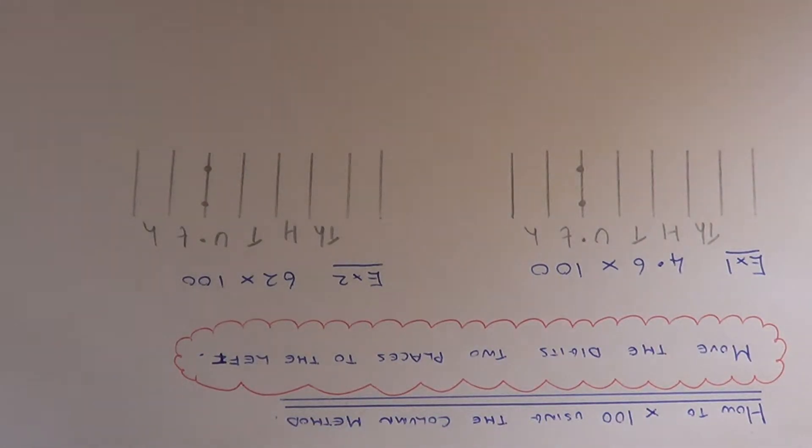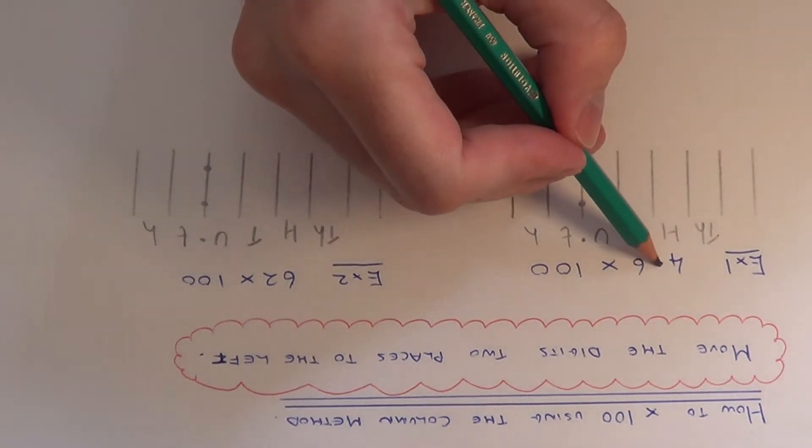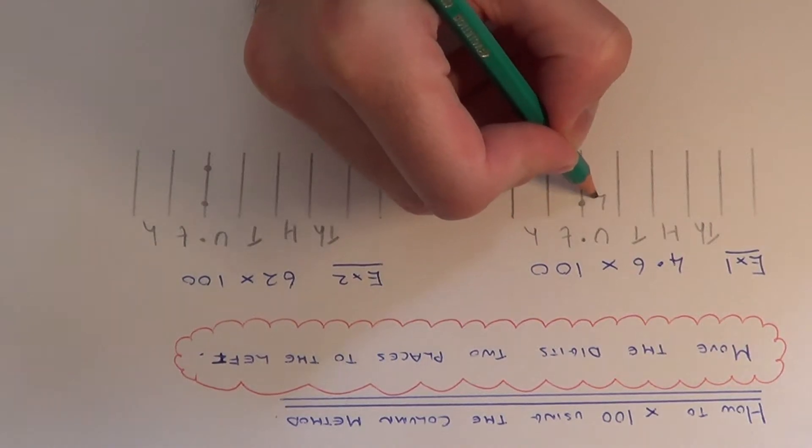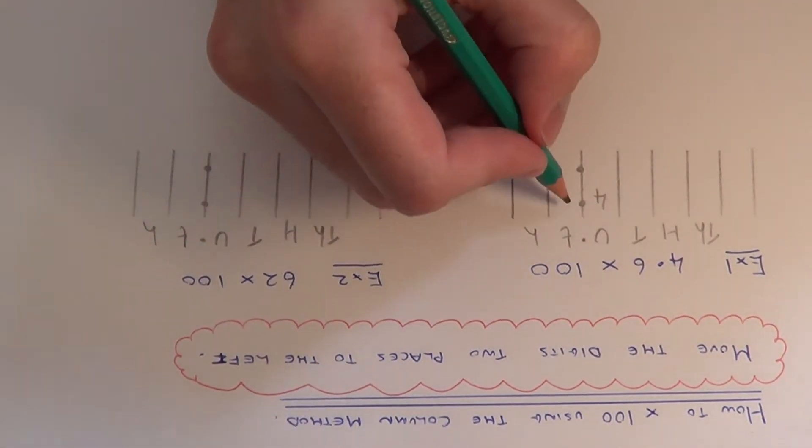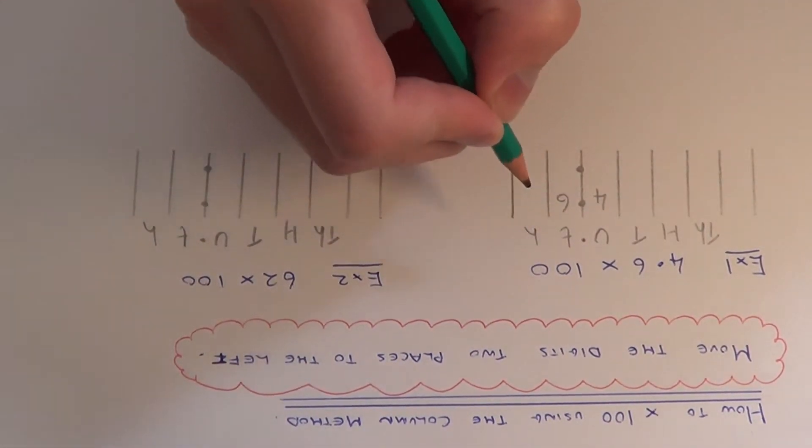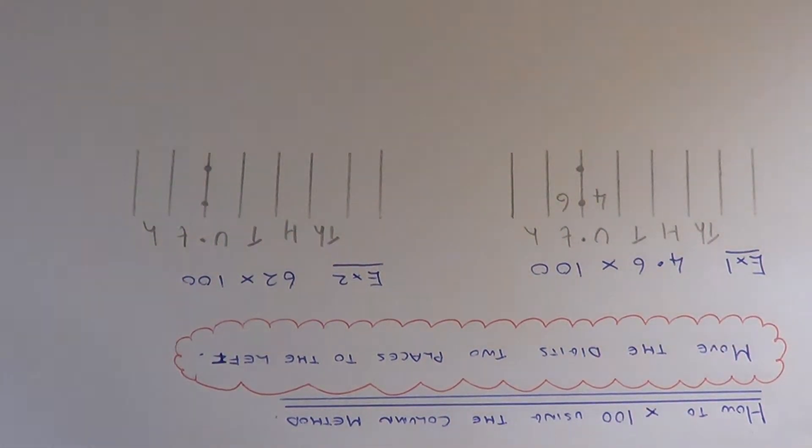We've got to work out 4.6 multiplied by 100. The first thing you need to do is place the 4.6 into the correct columns. To the left of the decimal point we have the 4 units, and to the right of the decimal point we have 6 tenths. So we've got 4.6 in our columns.